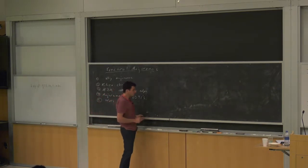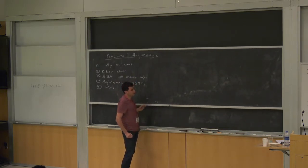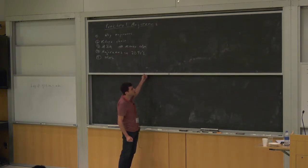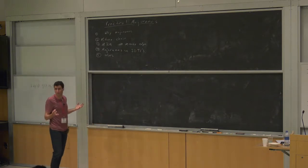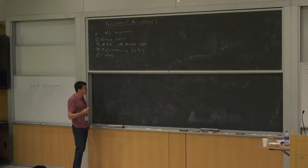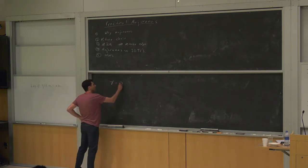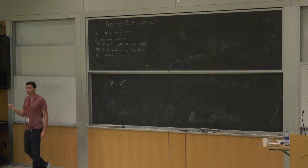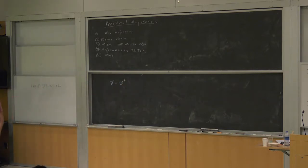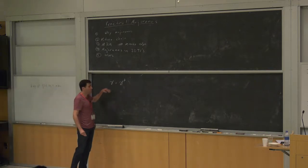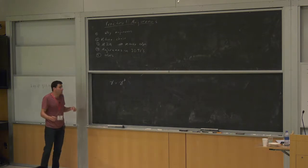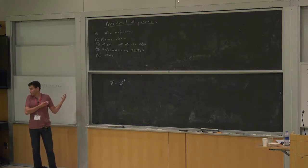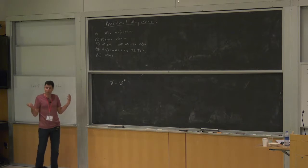What is a Majorana? It's supposed to be a state that is its own anti-state — a particle that's its own anti-particle. It would have an operator that equals its own dagger, in the sense of a creation operator that also equals its annihilation operator. You would think that this is very hard to get. Actually, every fermionic state does it.